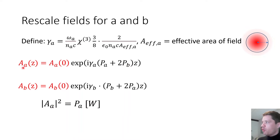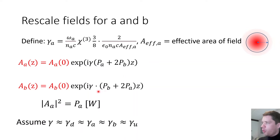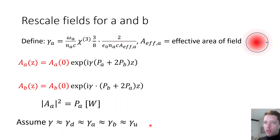We also rescale the fields so their absolute square has units of power, making things more tidy. Additionally, we assume all gamma values — for A, B, U, and D — are identical. This isn't a strict requirement but simplifies the math considerably.